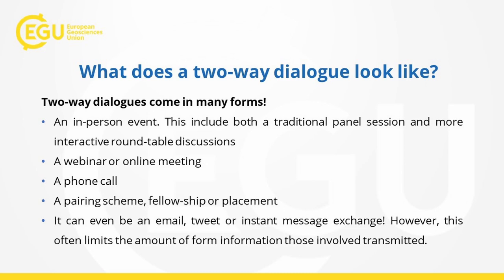Round tables get each person to give their input and introduce themselves, so after the event, even if it's just a couple of hours, everyone has that network and can build on it individually. Outside of that, you also have webinars, online meetings like this one, or talking on the phone. Then there are the longer forms — a pairing scheme, a fellowship, or a placement — which can really help build relationships over a longer period of time. And on a smaller scale, it can also be a tweet, an email, or an instant message.